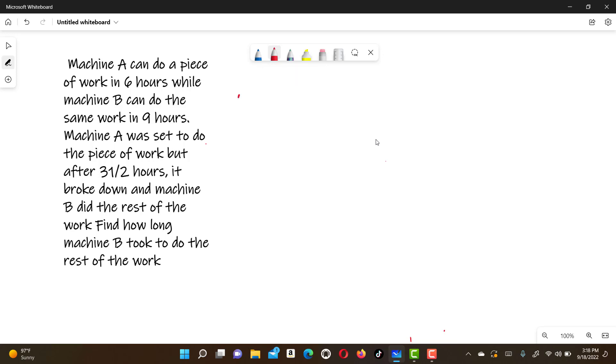So if we start with machine A, one piece of job machine A can do in six hours. What fraction of job can machine A do in one hour? Cross multiplying, machine A can do one over six of the job in one hour.